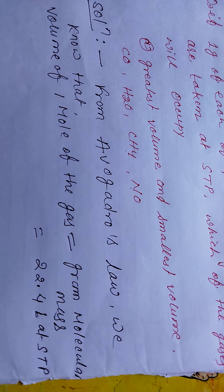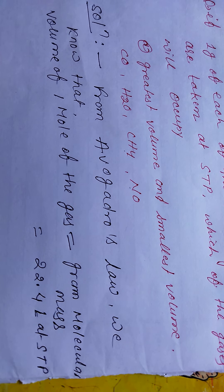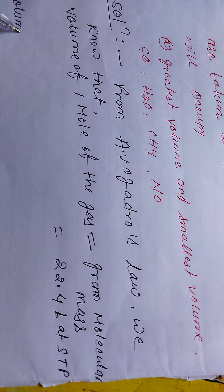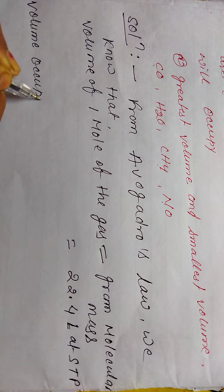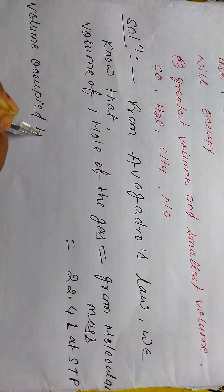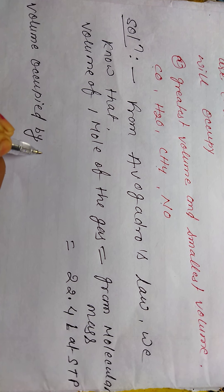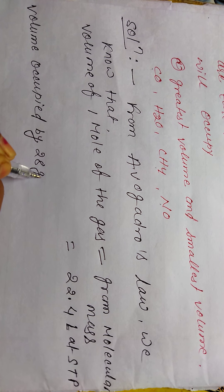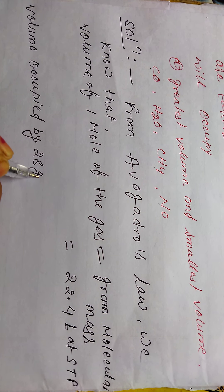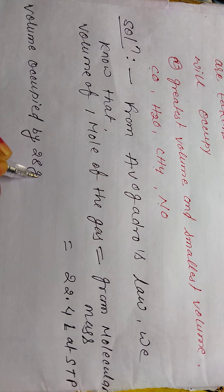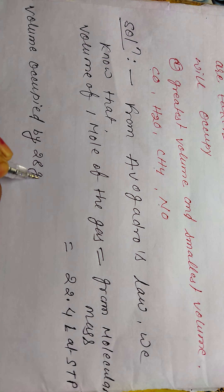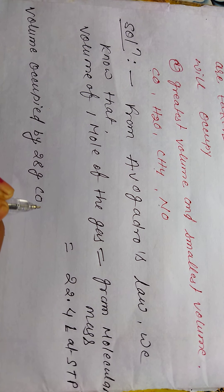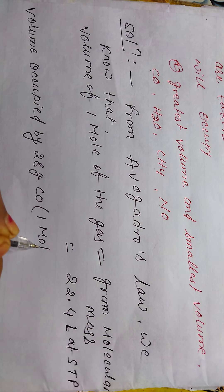Volume occupied by CO: 28 grams of CO (1 mole) occupies 22.4 liters at STP. The molecular mass of CO is calculated as carbon (12) plus oxygen (16), which gives 28 g/mol. So, 1 gram of CO will occupy 22.4/28 liters.